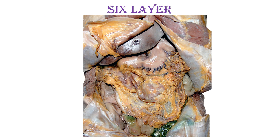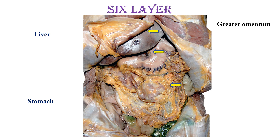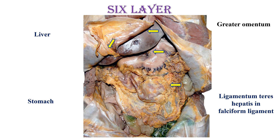Finally, the sixth layer is the most anterior layer. A section through the anterior wall and reflection of its parts on each side exposes this layer — it is the first thing you see after opening the abdominal cavity. The main structures are the liver, the stomach, the greater omentum covering the small intestine and the parts of the large intestine, and it is attached to and covers the transverse colon. In the liver, you can see the ligamentum teres found between the two layers of the falciform ligament. That is the sixth layer.